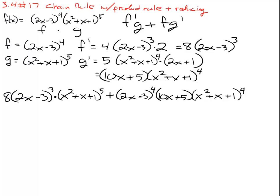Now if we have to reduce this — meaning if we are thinking ahead to where we might take a derivative and set it equal to zero — if we set this equal to zero we won't be able to solve it because of the plus. We can only set a product equal to zero and have any hope of finding zeros. So we need to change this sum into a product, which means we have to factor out what the two terms have in common.